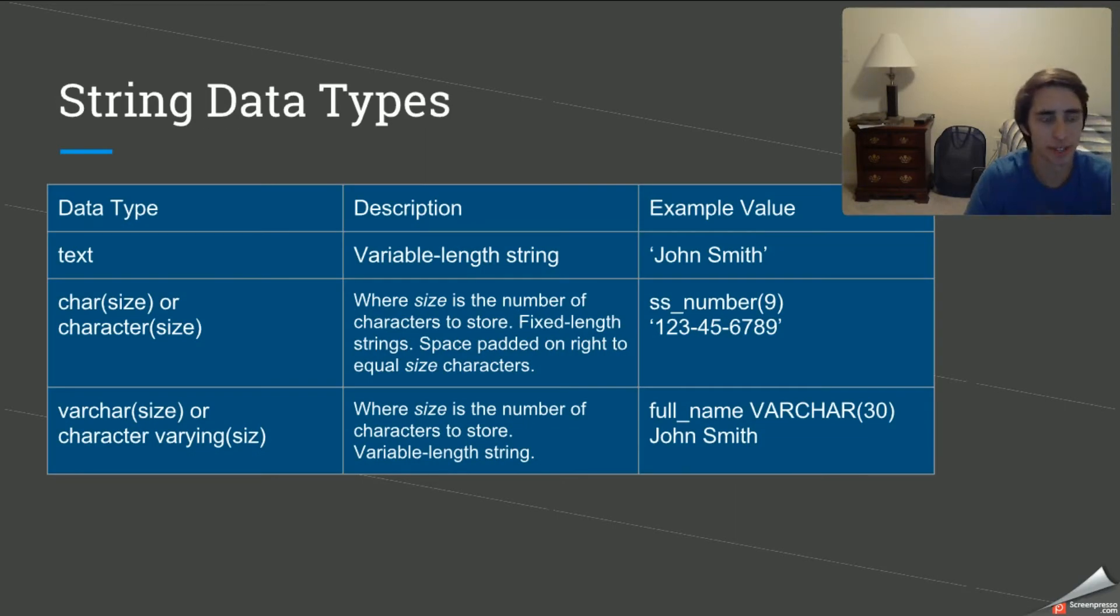So we have string data types. What are some good examples? Well, you can probably tell off the bat the first one we have is the text-based data type. And this is a variable-length string, meaning really it can have any length at once and it can be a mixture of letters and numbers. So there's really not much constraints here in this type.